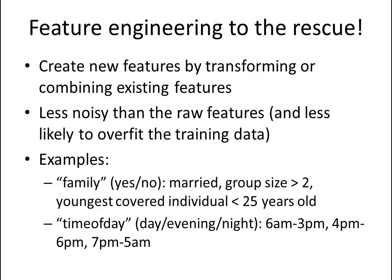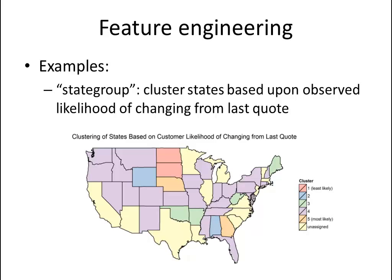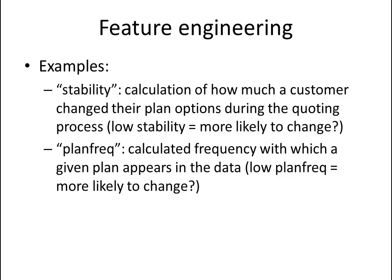No worries, though, because we can do some feature engineering — creating new features by transforming or combining existing features. My theory was that these might be less noisy than the raw features and less likely to overfit the training data. I created new features called Family and Time of Day. I also created an interesting feature called State Group, where I clustered states based on similar customer behavior — for example, North Dakota and South Dakota are in the same cluster. Two more features were Stability and Plan Frequency, which summarize a customer's quote history in a single number.